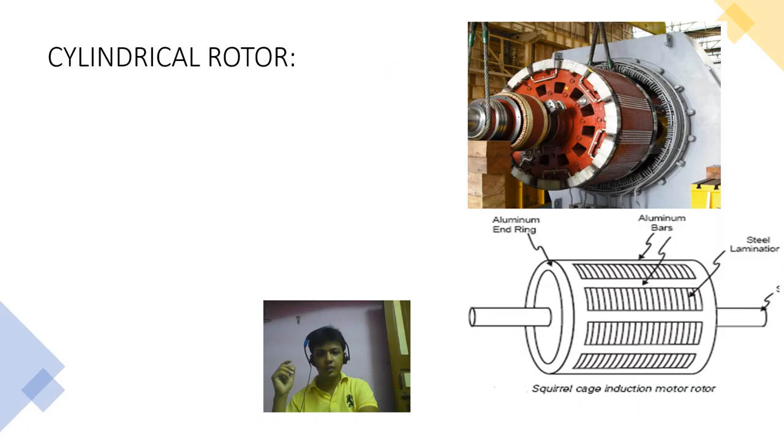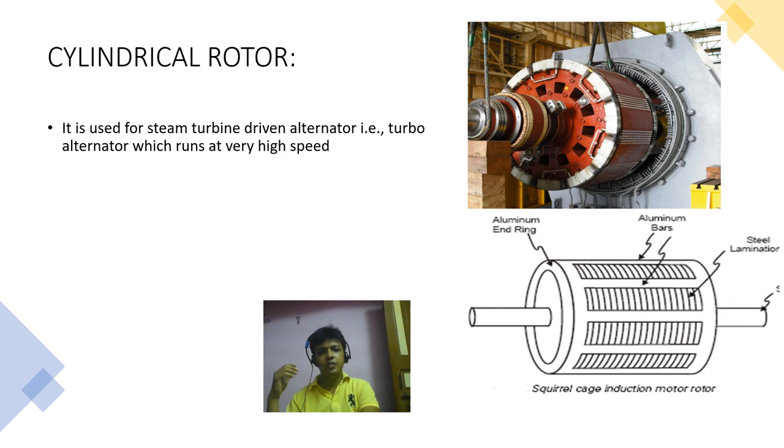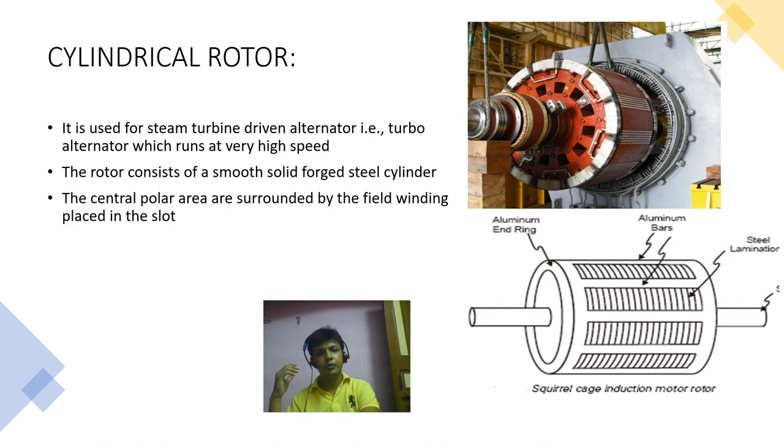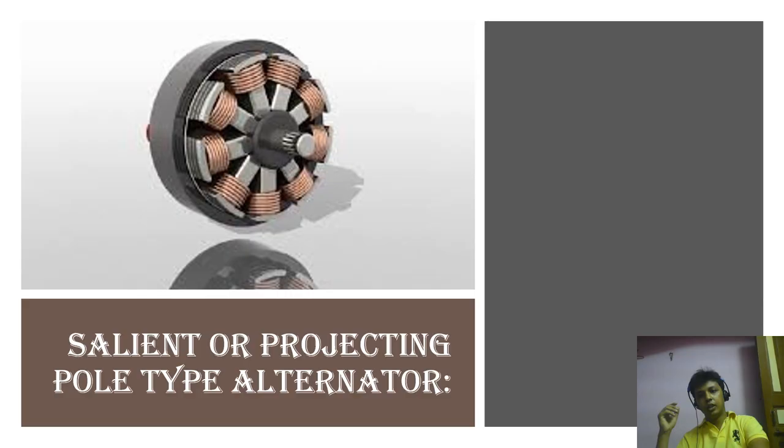Now we are going to discuss about cylindrical rotor. It is used for steam turbine driven alternator, that is turbo alternator, which runs at very high speed because it has less number of pole. And we know that speed equal to 120 f by p. As the number of pole is less, speed is high. The rotor consists of smooth solid forged steel cylinder. The central polar area surrounded by the field winding placed in the slot. To avoid excessive peripheral velocity, such rotor has small diameter and long axial length.